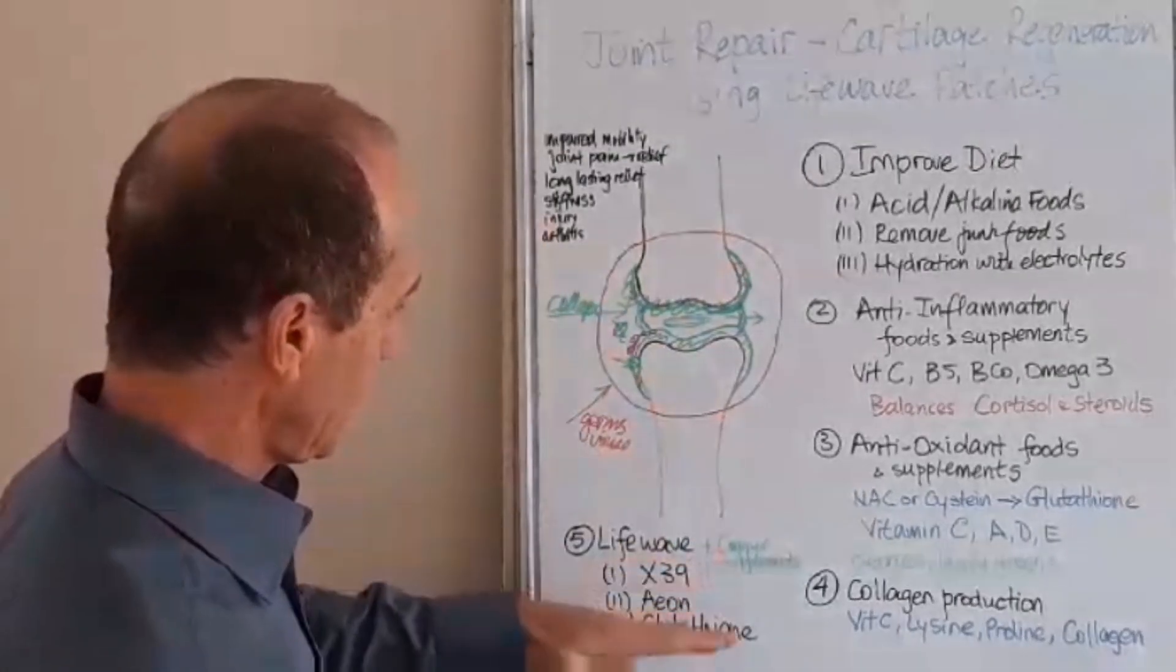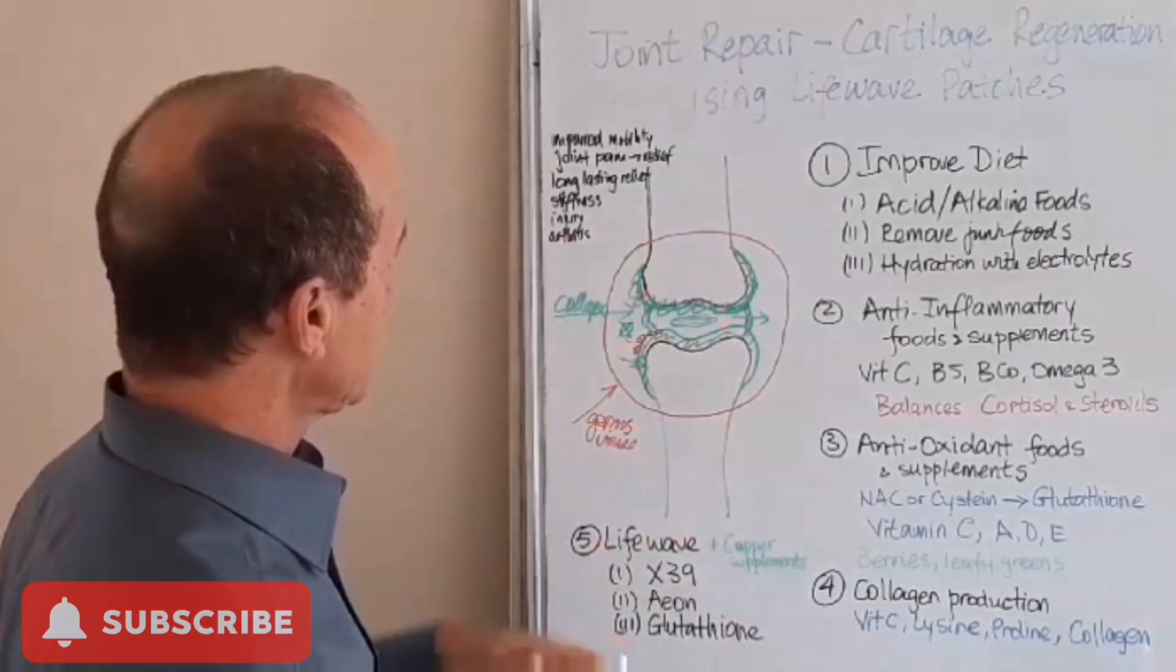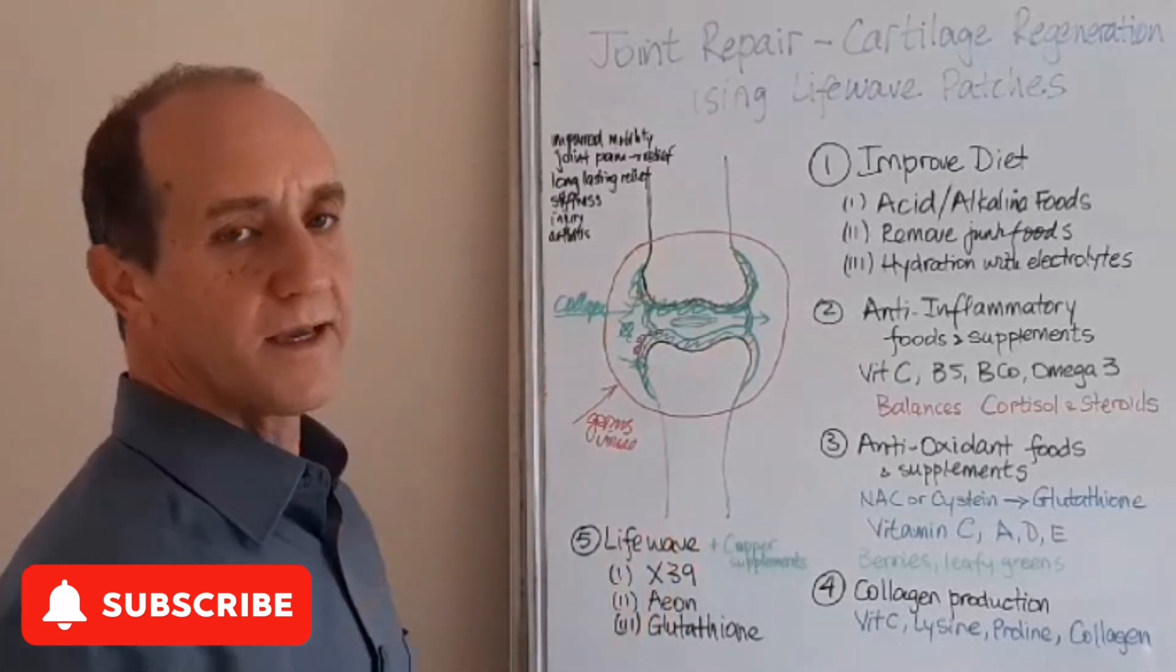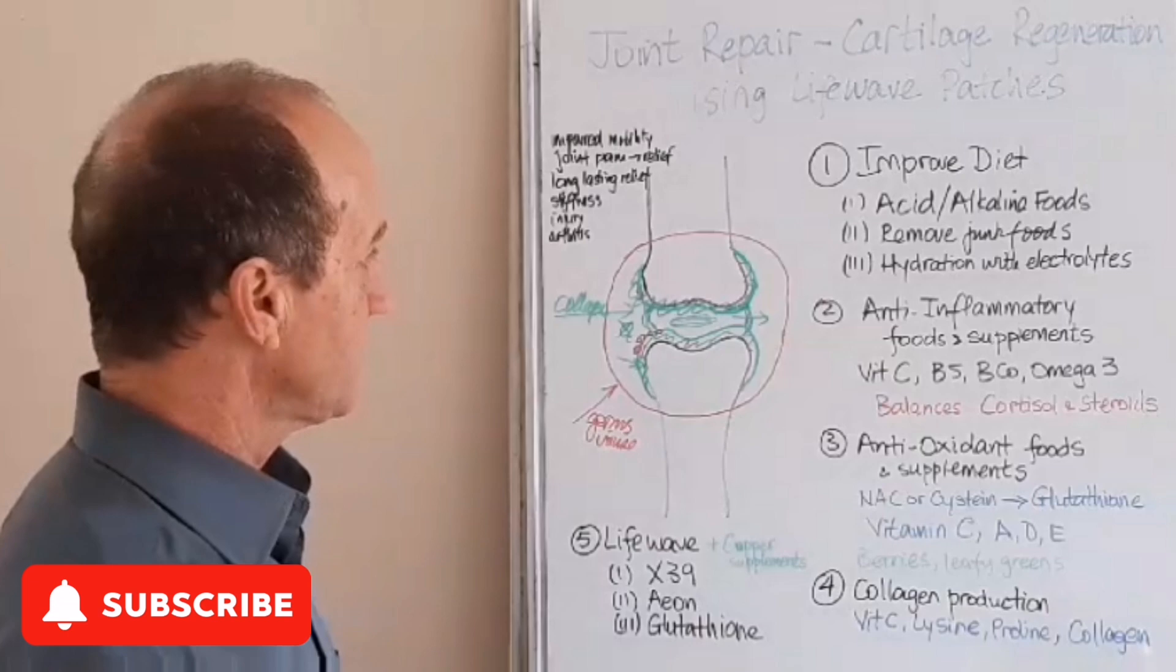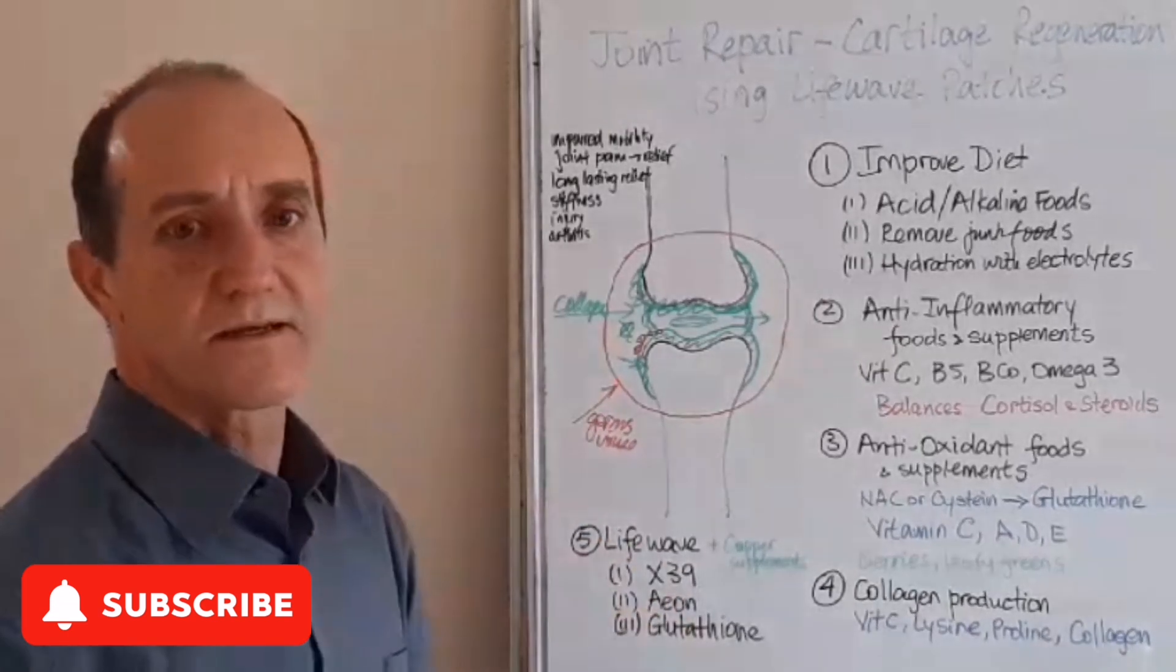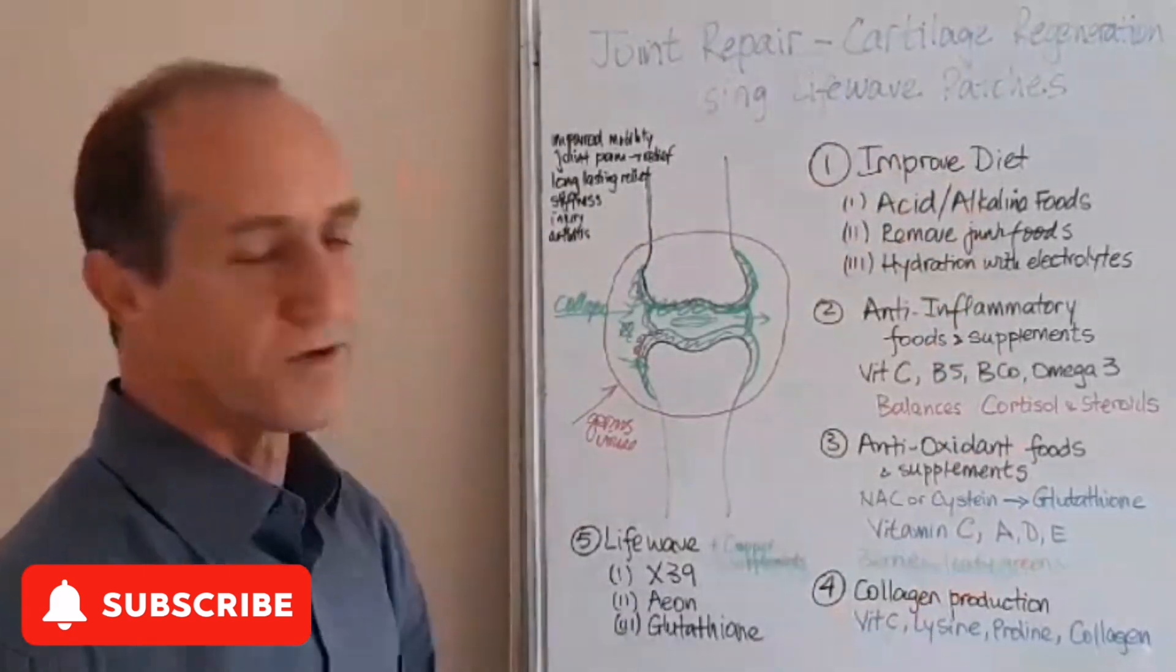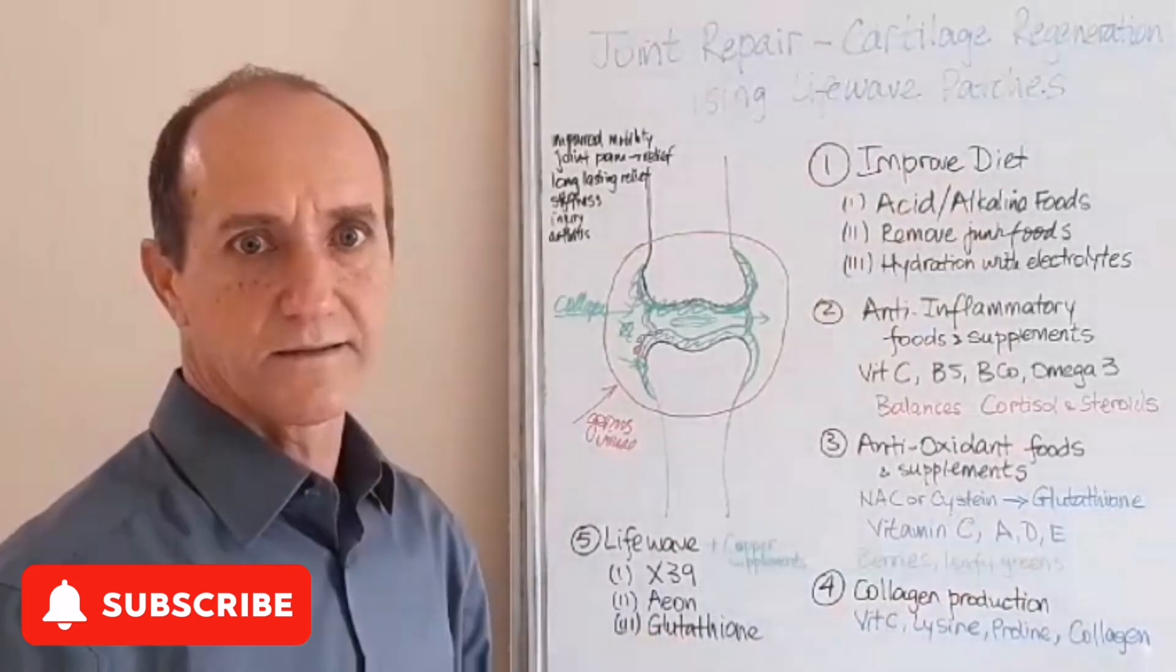That's why people say when they've taken X39 and Aeon and glutathione, they've had bone-to-bone joints, all that gets repaired. The stiffness goes away, long-lasting relief, arthritis drops, whatever the joint pains were, and they regain mobility. I have enough success stories that I've seen with my personal clients. One of them is 68 years old, he couldn't bend his knees getting in the car, couldn't bend his knees going into the shower. Within two to three months taking X39 and following this protocol, he is now free of the joint pains.